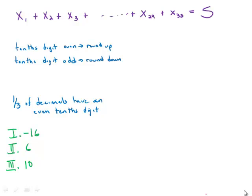e is the sum of the resulting integers. If a third of the decimals in t have a tenth digit that is even, which of the following is a possible value of e minus s?